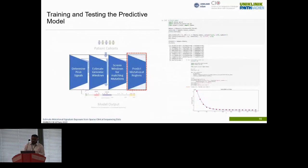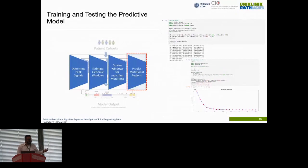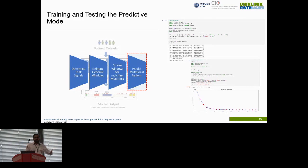The final step of our model is to train and test the predictive model. We find these informative regions, feed them into our predictive model, train it, with the main focus that the model is able to correctly identify these regions.